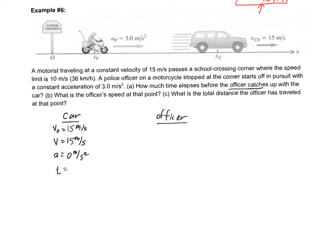Now for the officer: he's at rest at the school crossing sign, so his initial velocity is zero. He's going to have a constant acceleration of 3.0 meters per second squared. Again, we're looking for the amount of time until he catches up.